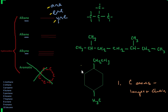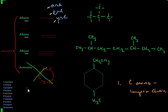We have three examples up here and we'll go through them all. What we have down here are the parent names. The numbers correspond to the number of carbons on the longest chain in our compound. And that's what our first step is going to be.